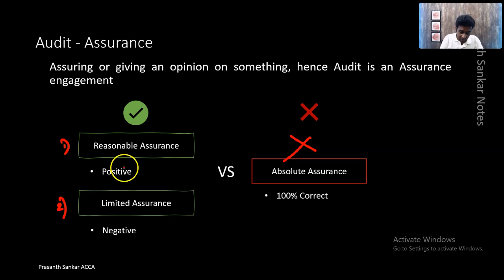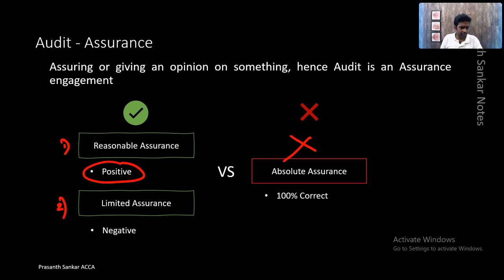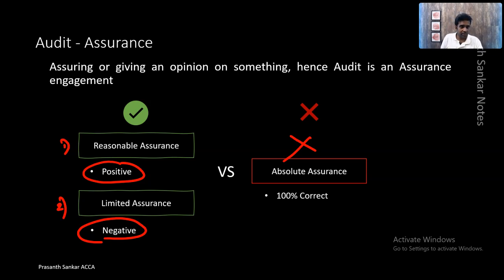Reasonable assurance is positive in nature — it's equal to saying it's good. Limited assurance is saying it's not bad. If you say it's not bad, it could be good for some people but bad for some people as well. That is called negative assurance. We are not saying it's good, but we are not saying it's bad either. We are just saying it's not bad.